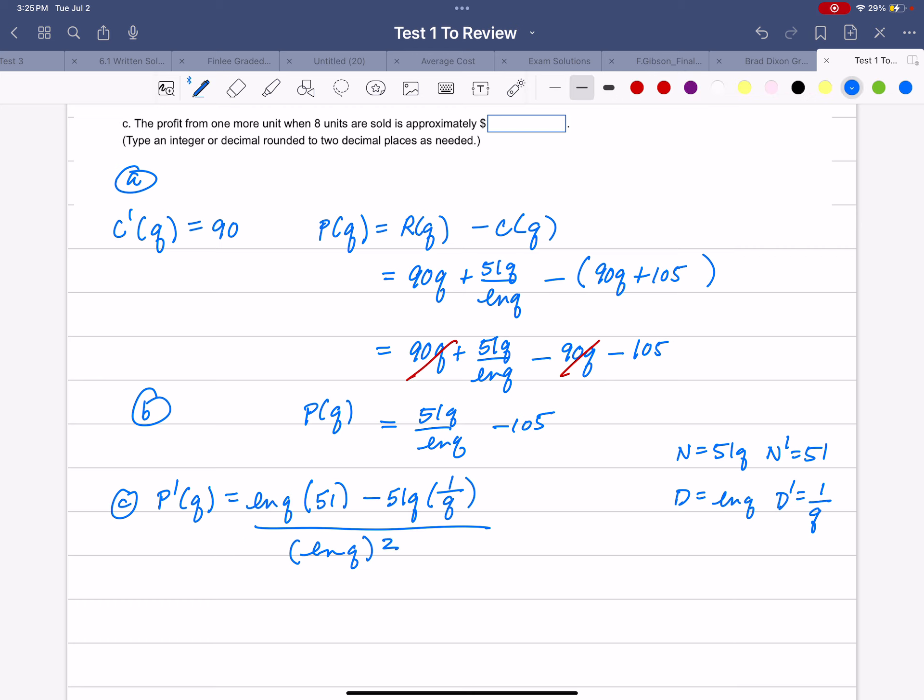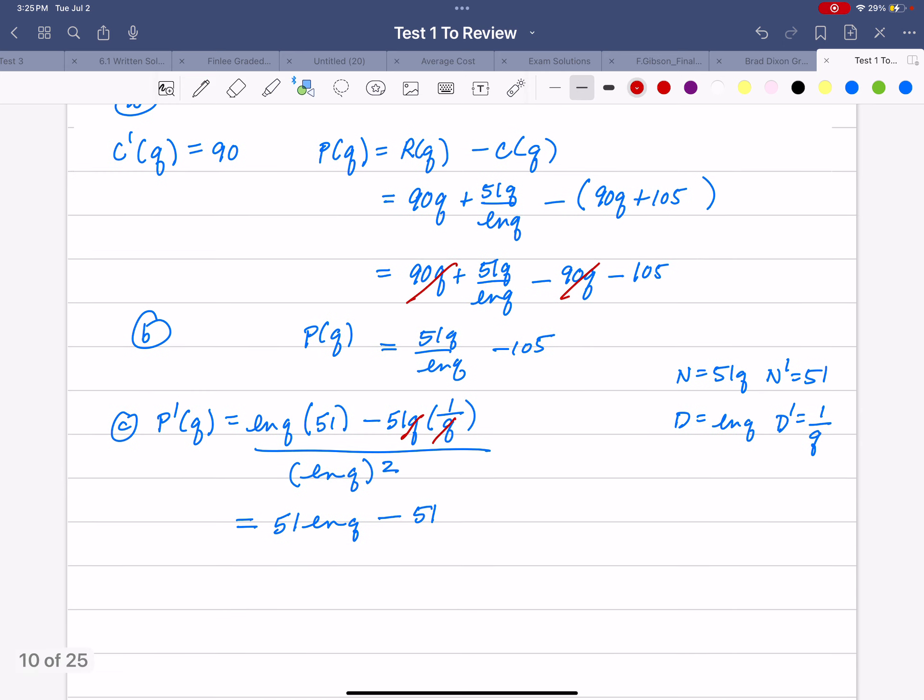You've got to be careful with the placement of those parentheses. A little simplifying: 51 times the natural log of Q minus 51, because these Qs divide to 1. That's all over the natural log of Q quantity squared.